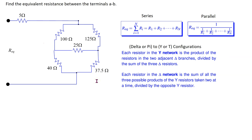In this video we will look at how to correctly apply a delta to Y transformation to find the equivalent resistance of a bridge circuit. This arrangement of resistors is a bridge circuit. The resistors are neither in series nor in parallel.